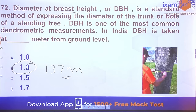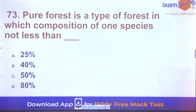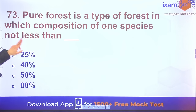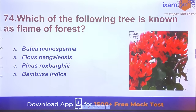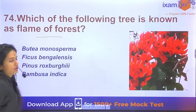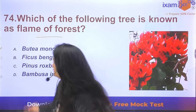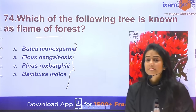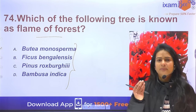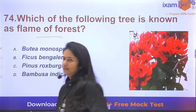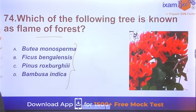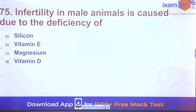Question 73: A pure forest is a type of forest in which the composition of one species is not less than a certain threshold — students should find and answer this. Question 74: What is the 'Flame of the Forest' called? This type of question from forestry has been appearing in NABARD and AFO exams.